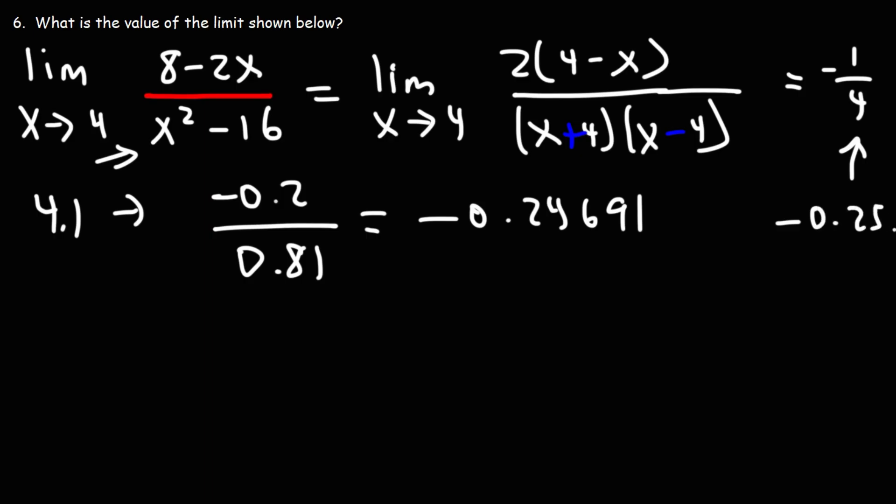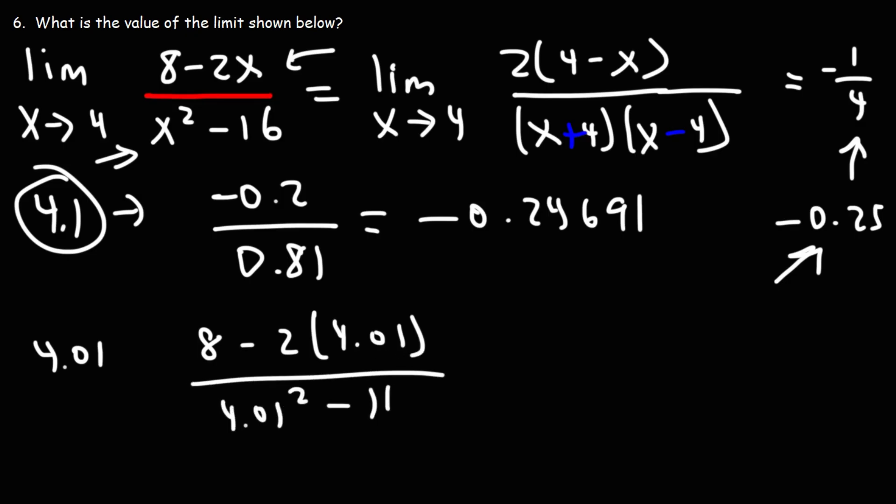As we get closer to four, the limit will approach this value. For instance, if we plug in 4.01 into this formula, we get eight minus two times 4.01 over 4.01 squared minus 16. You may want to use an extra set of parentheses for the numerator and denominator when doing this. If you plug that into your calculator,